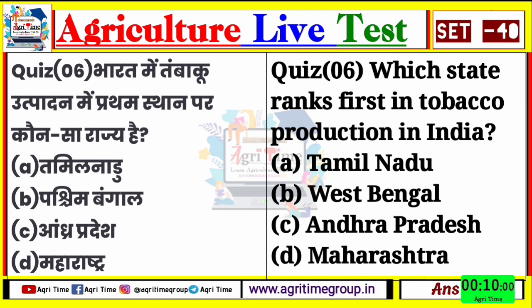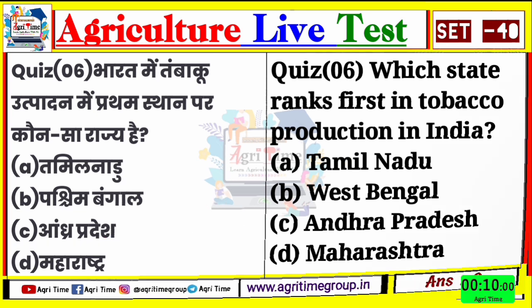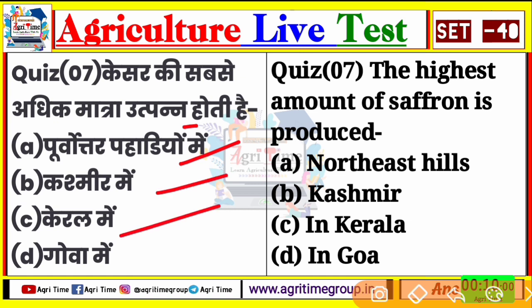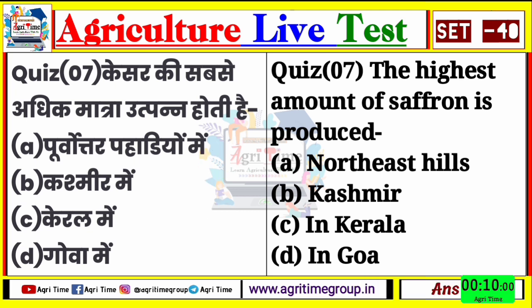चलिए बढ़ते हैं अगले question की ओर question number 7। ये रहा आपके screen पर - केसर की सबसे अधिक मात्रा कहाँ उत्पन्न होती है? The highest amount of saffron is produced. Options हैं: पर्वतीय पहाड़ियों में, कश्मीर में, केरल में, गोवा में। Comment कीजिए quiz 7 का right answer क्या होगा?